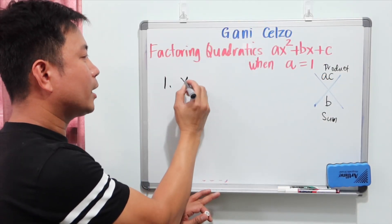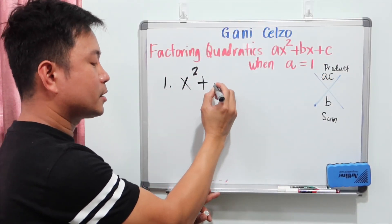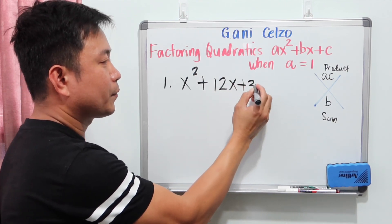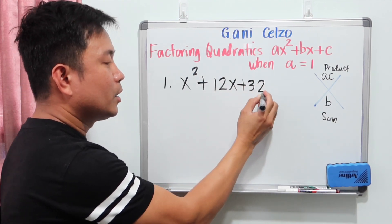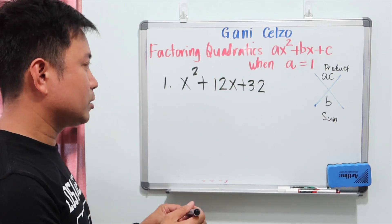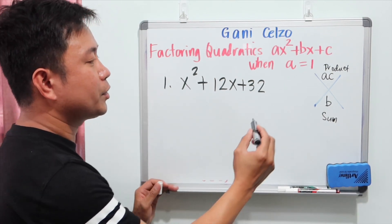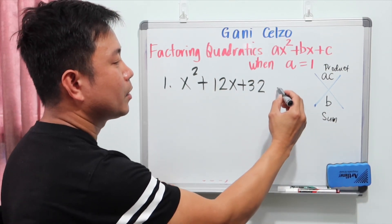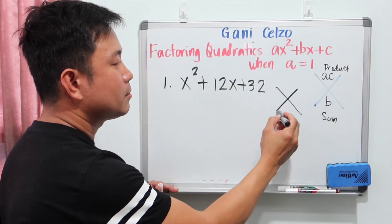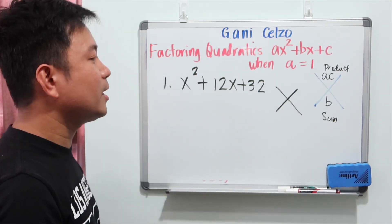For example, if we have x squared plus 12x plus 32, to factor this we need to set up the diamond, or the X method.